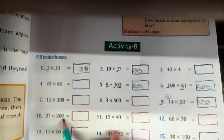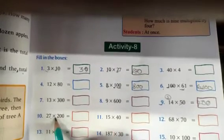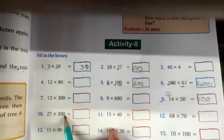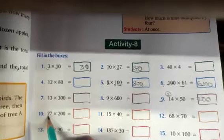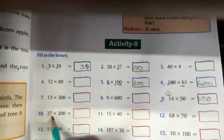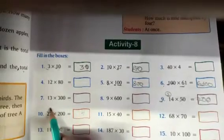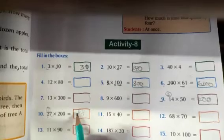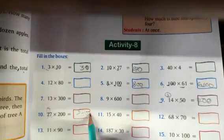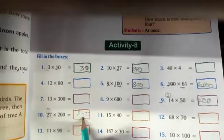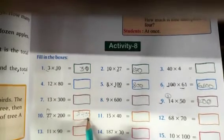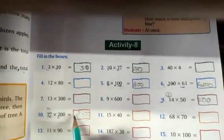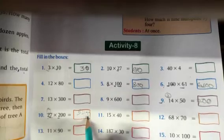Now the 10th one: 27 is multiplied by 200. First 27 is multiplied by 2. 2 sevens are 14, write 4 and put 1 as carry. Then 2 twos are 4 plus 1 equals 5. After that we add two 0s to get the product 5,400. First we multiply number by number, then we put the two 0s.